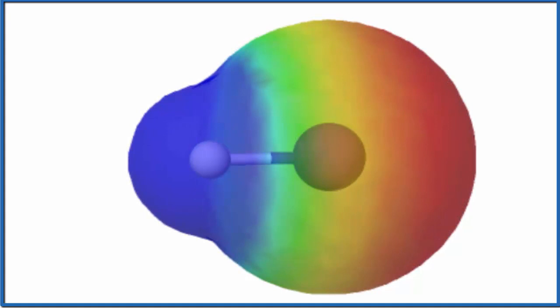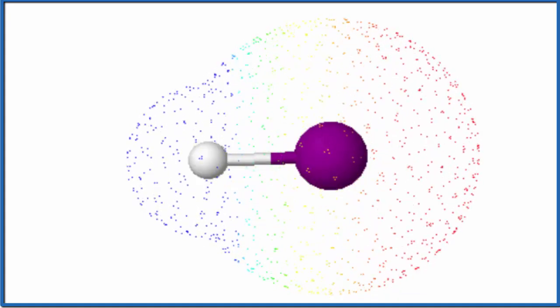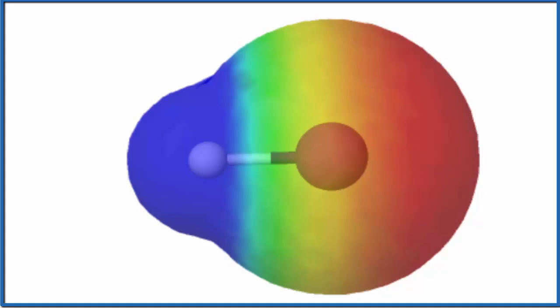So you can see that the red, that's around the iodine atom, and then the blue, that's around the hydrogen. So we have more negative around the iodine, more positive around the hydrogen. It's a polar molecule.